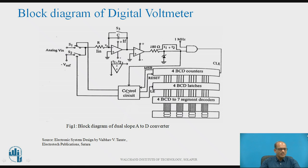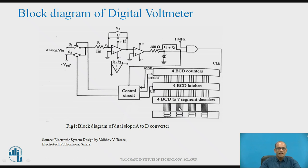Following the BCD counter, there are 4 BCD latches to hold the output of the counter, then 4 BCD-to-7-segment decoders and 4 seven-segment displays as shown in the figure. To control all the actions, there is a control circuit. The control circuit inputs are the output of the comparator and the MSB of the counter. The output of the control circuit controls switches S1 and S2, the counter reset, and the latch enable of the BCD latches.